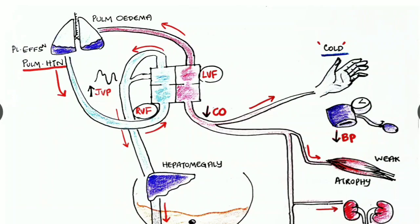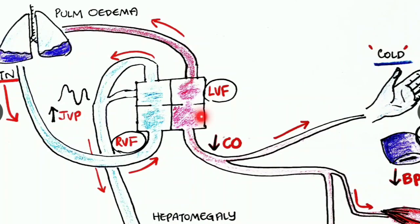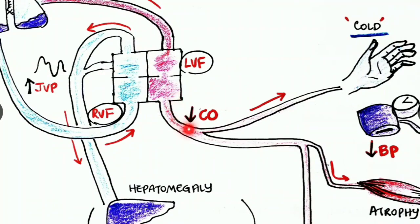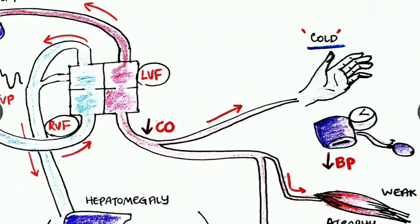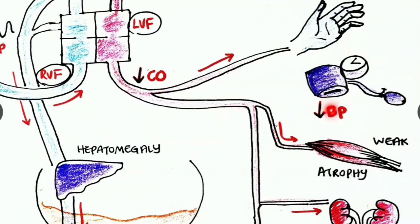From the circulatory system perspective: in left ventricular failure, increased left atrial pressure causes back pressure leading to pulmonary edema. Reduced cardiac output reduces blood supply to the peripheries, causing cold clammy skin. Reduced cardiac output also causes reduced blood pressure and reduced blood supply to skeletal muscles, leading to weakness and atrophy.